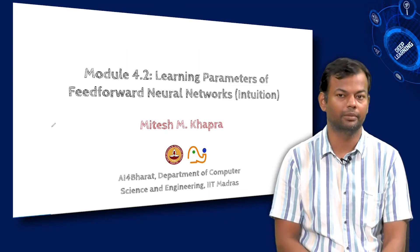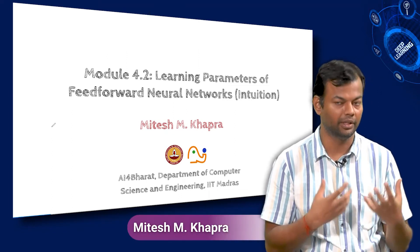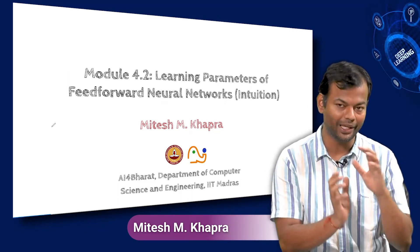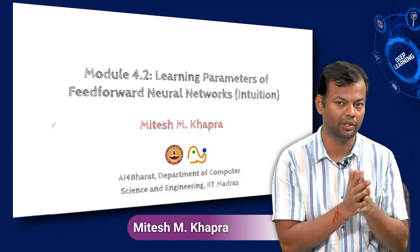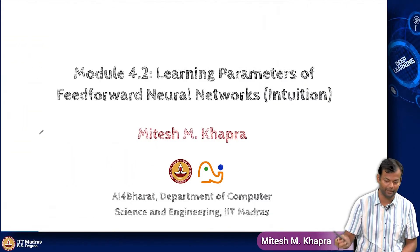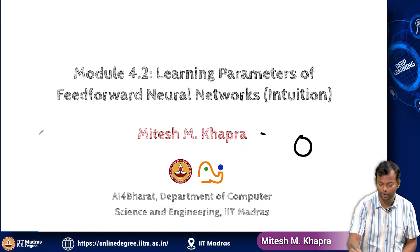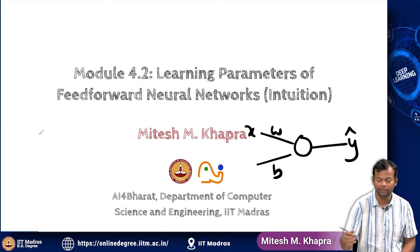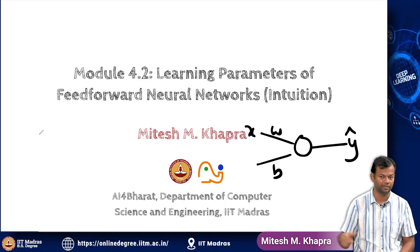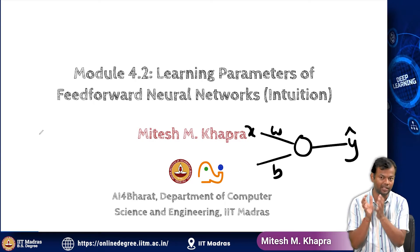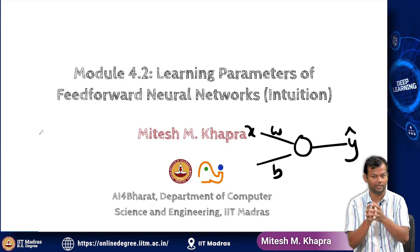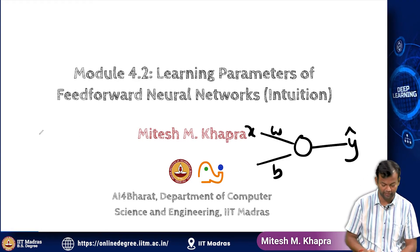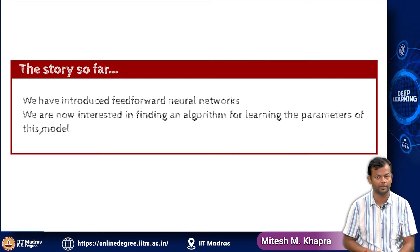Now let us talk about the intuition behind learning parameters for a feedforward neural network, and how we connect it to what we already know. We have already seen how to learn parameters of a very simple network — for a single neuron with a W and a B and a single input producing Y-hat — using gradient descent. Can we somehow stretch and extend that to learn all the parameters of a feedforward neural network? That is what we will focus on.